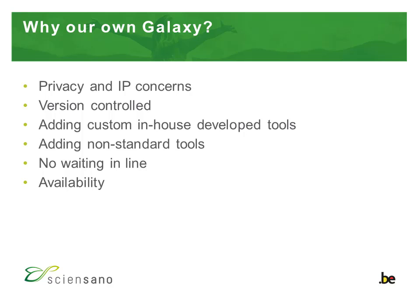Another benefit of having our own system is the fact that we have a system that is version controlled. This means that we have a complete record of which version was running at which time, and we can recreate an older version of Galaxy in case it should ever be needed. A third benefit is that we can add almost any command line or open source Linux tool to the Galaxy tool catalog. By default, many tools are already installed and made available by the Galaxy team or by other independent researchers, but not all tools are available yet.